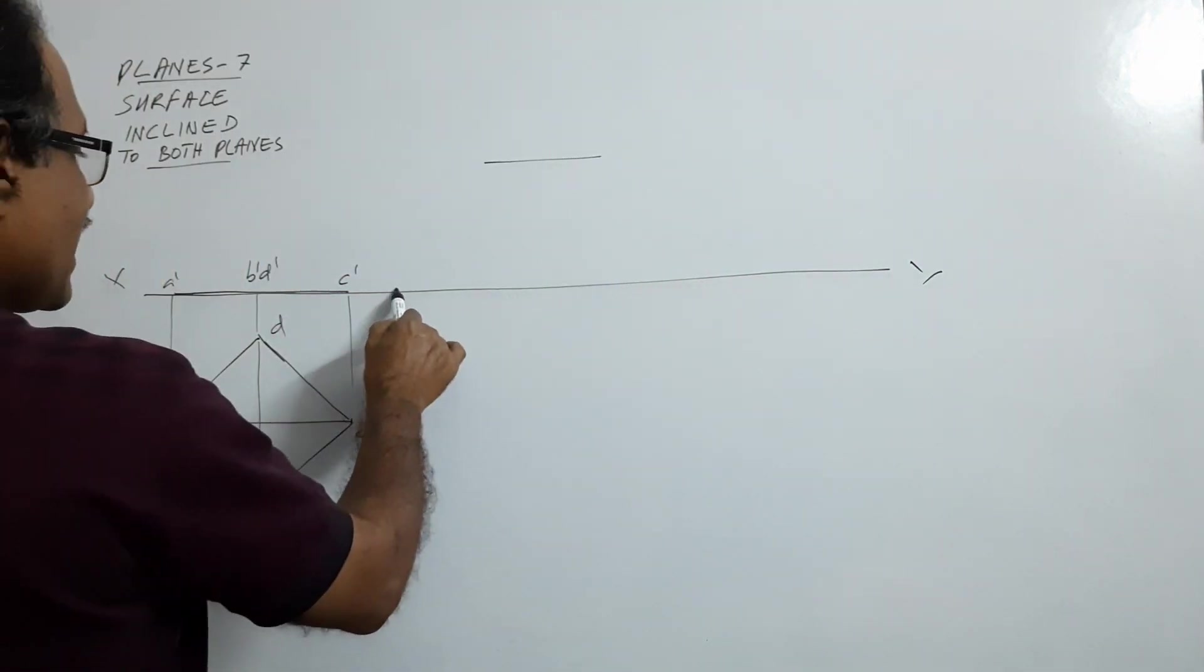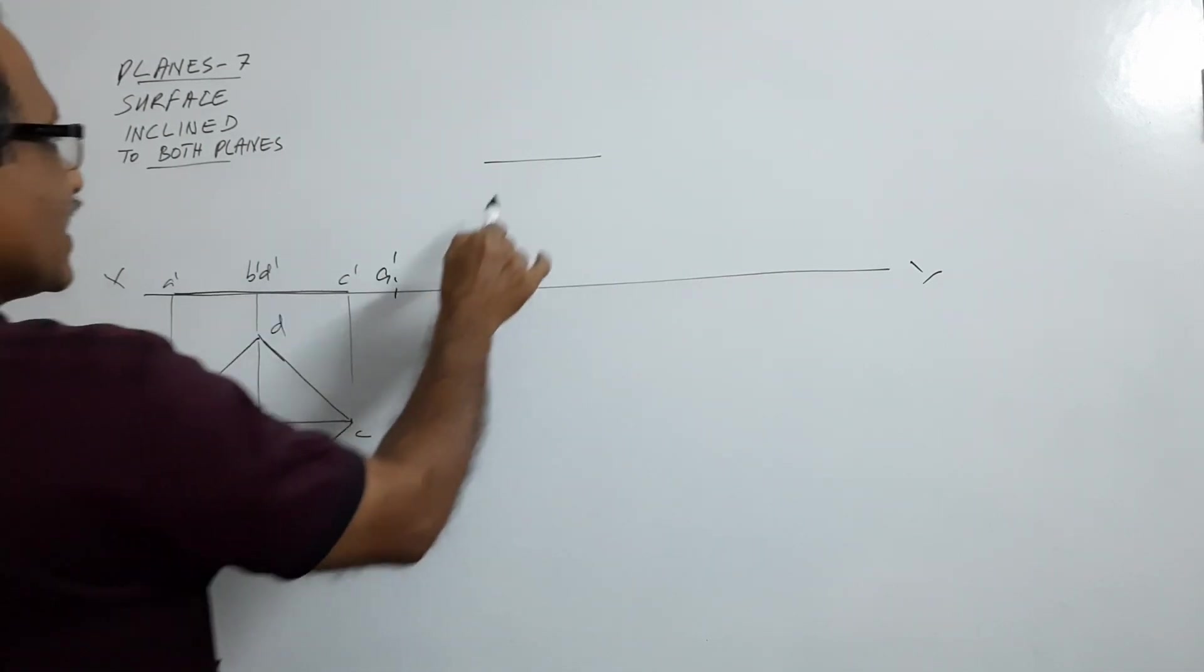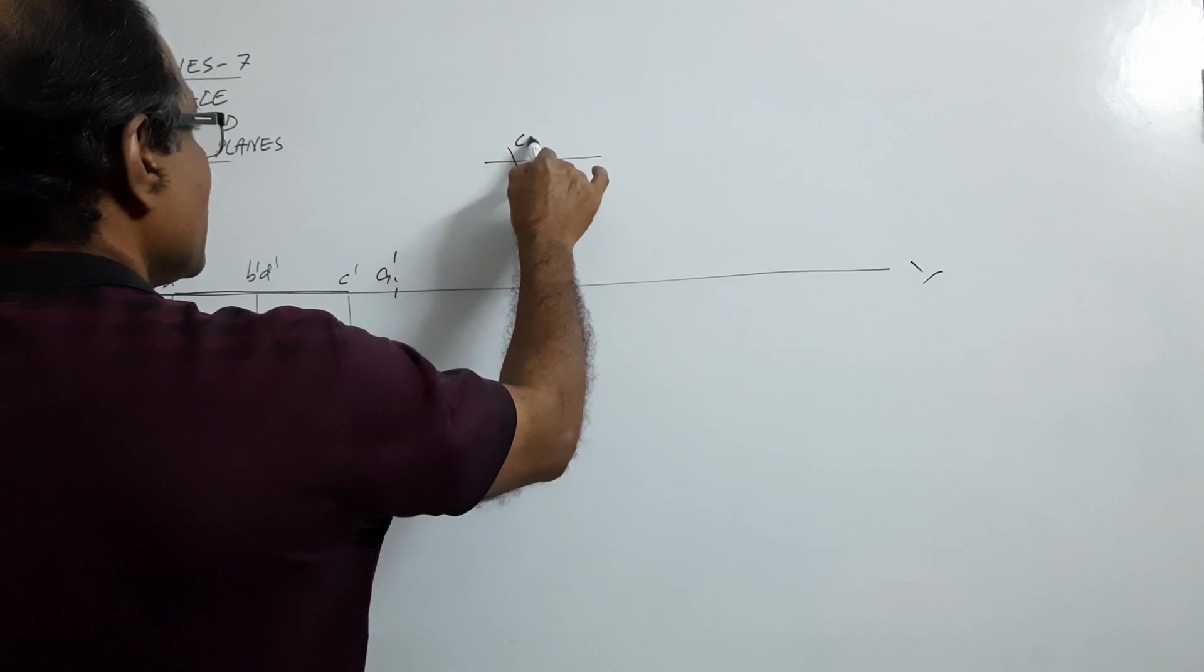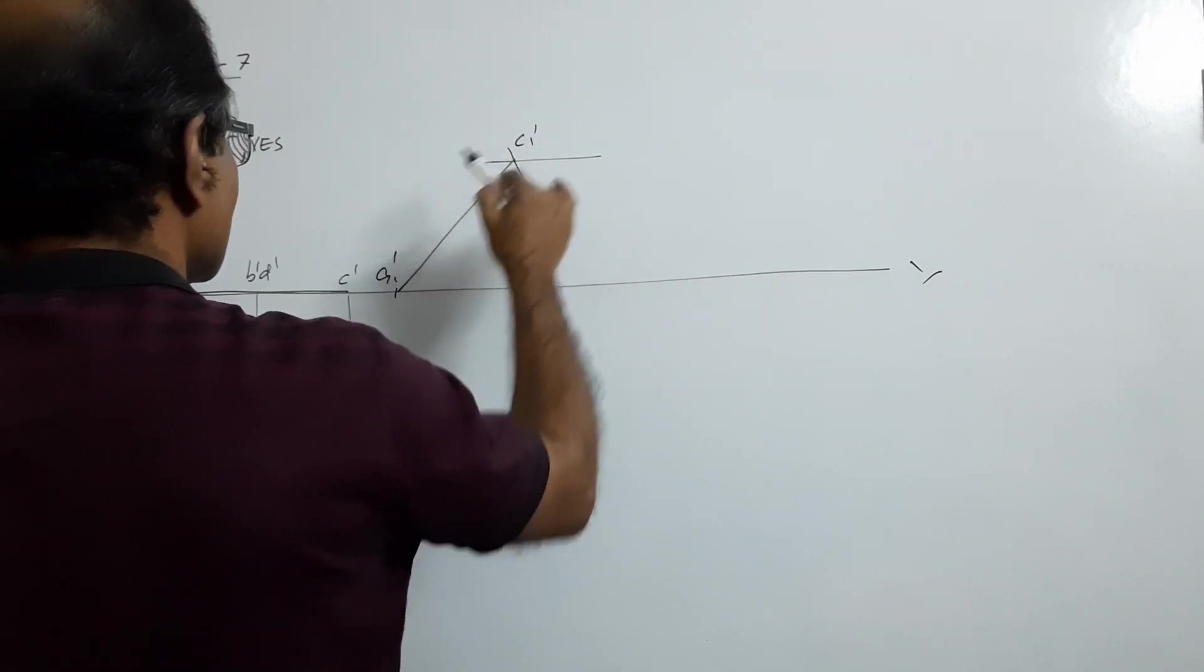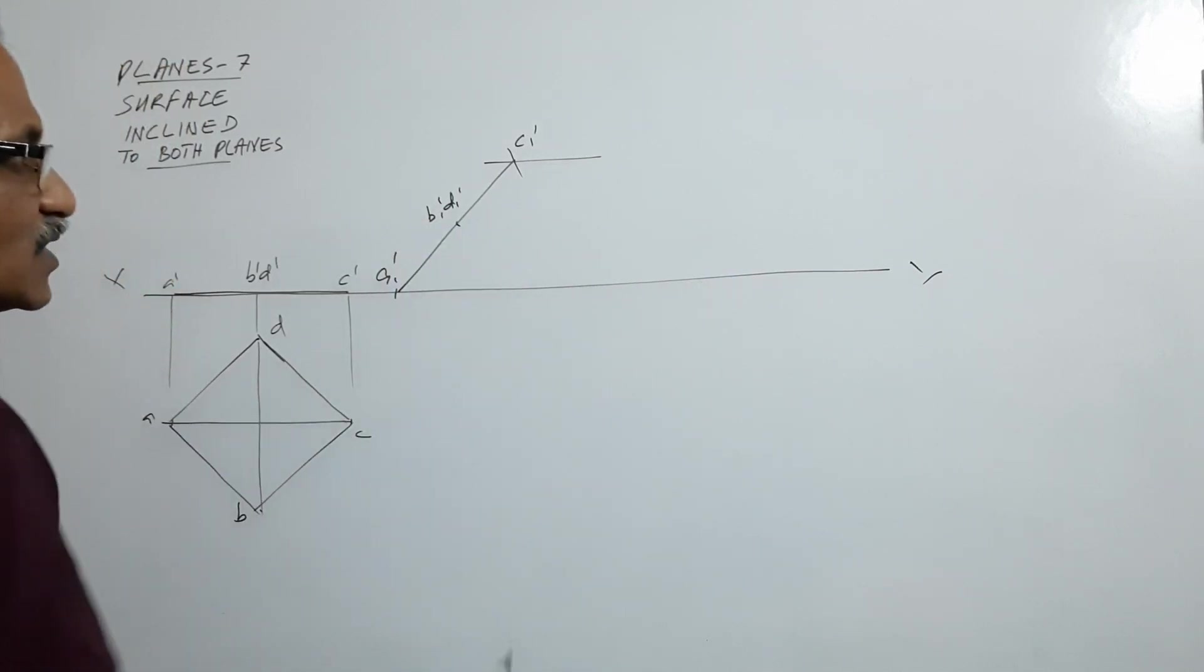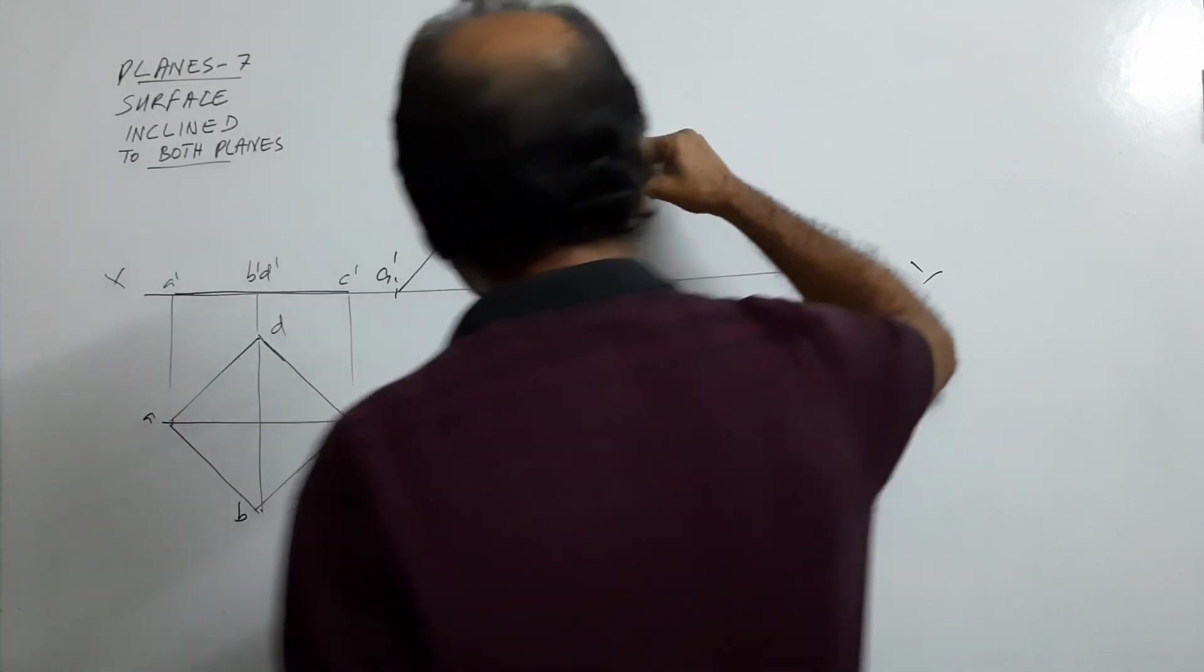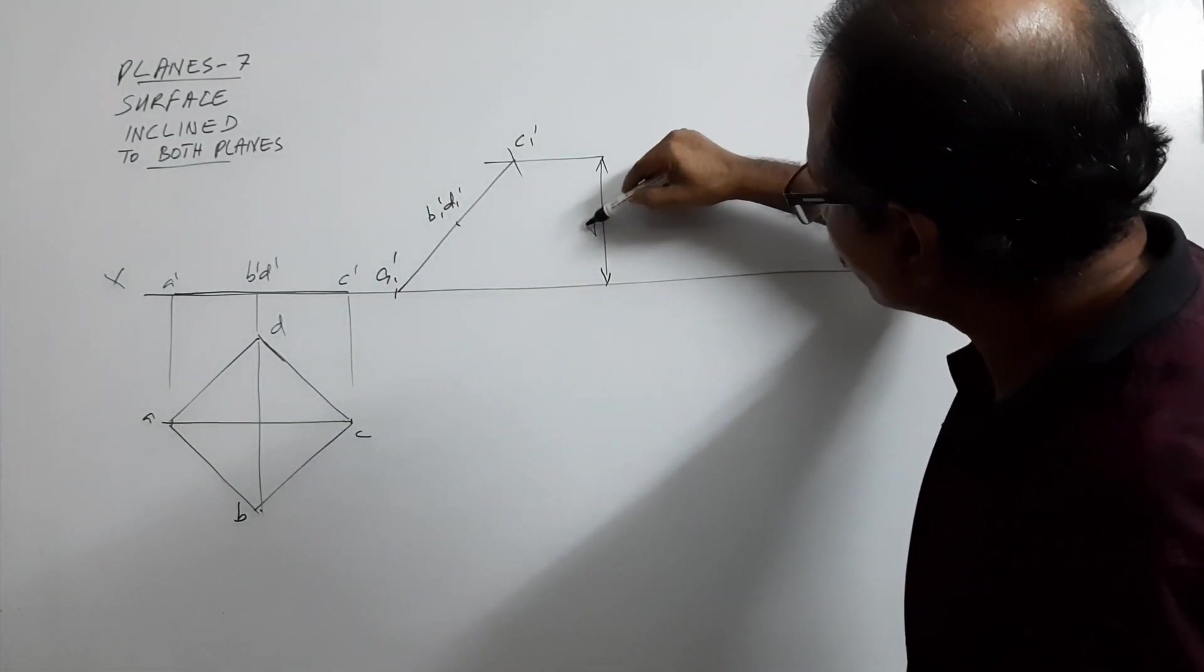Take A1 dash anywhere on XY line, take this elevation length and cut. This is C1 dash. What is this? This is B1 dash, D1 dash. What is this distance? This distance is 45mm.